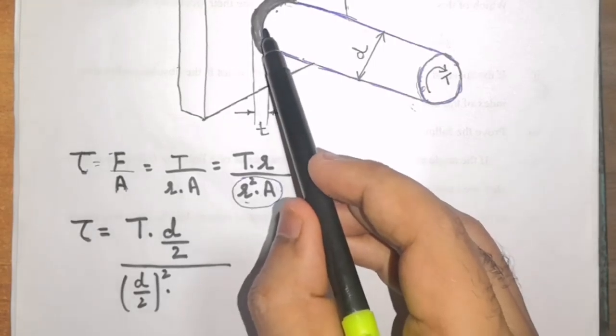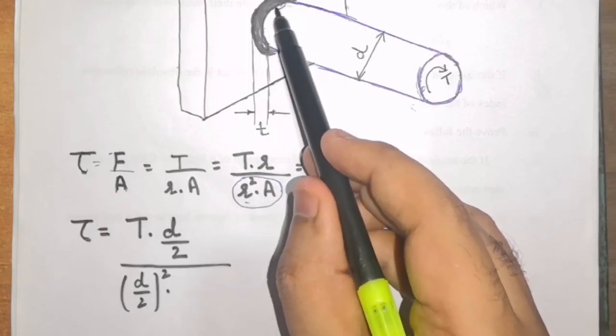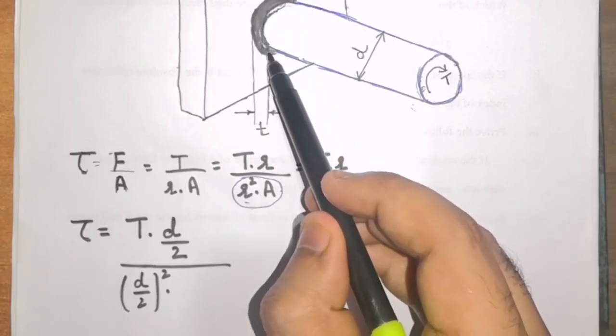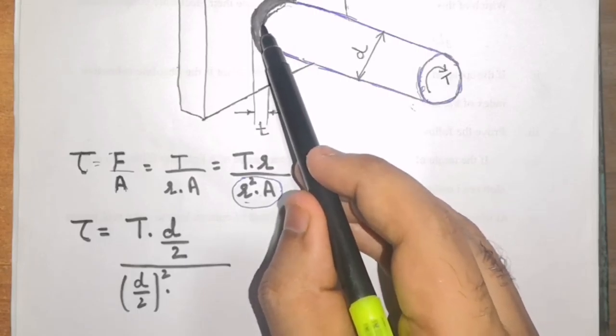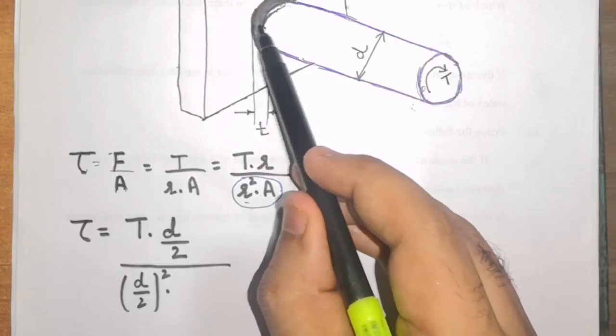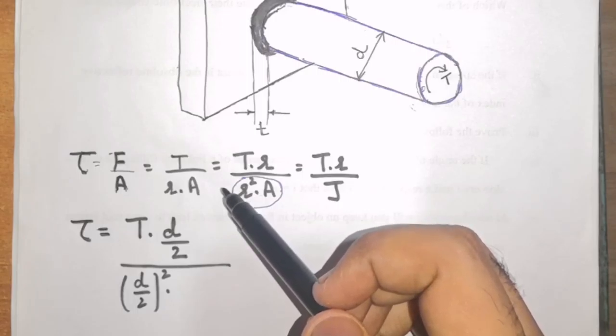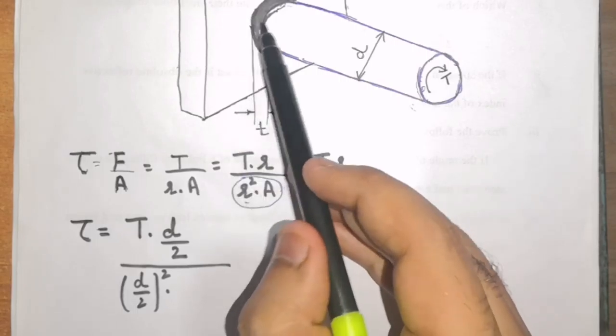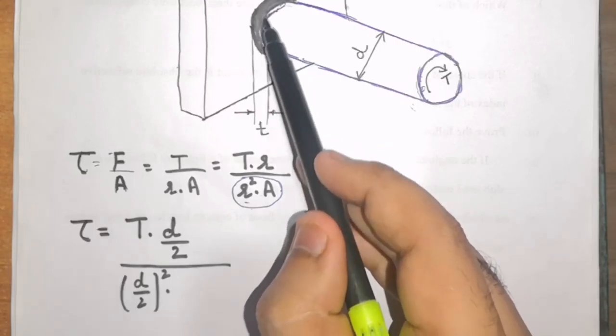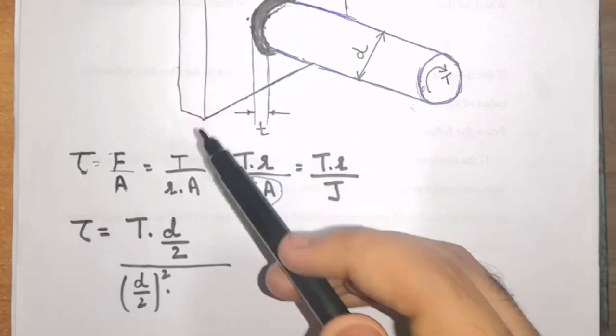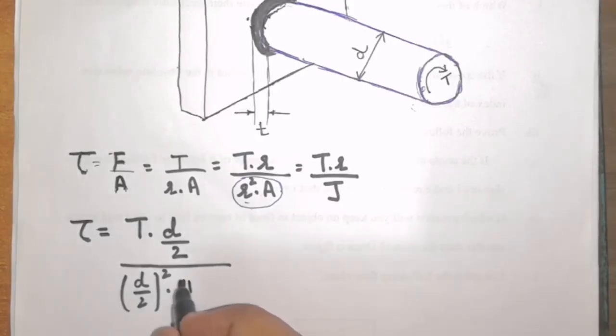From this diagram, we can see that this weld will shear along the circumference. So, circumference will be pi D multiplied by the thickness of the weld at throat, because we know that welds always fail from the throat point. So, the area of this weld will be pi D that is circumference multiplied by T. So, replacing area by pi into D into T.